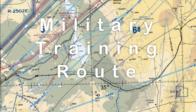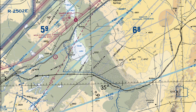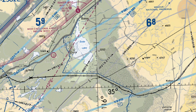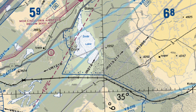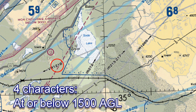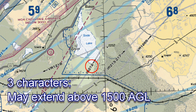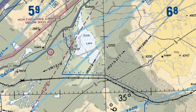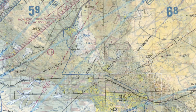Military training routes are a more subtle hazard as they often exist outside of restricted, alert, or MOA-designated airspace. They are often used by fighter-type aircraft that may not necessarily be constrained by the usual 250-knot limit below 10,000 feet. They are depicted as light gray lines with either an IR for IFR or VR for VFR designation and an associated number. A four-character number indicates the route contains no segment above 1,500 feet AGL; those that may extend higher contain only three characters. It's a good idea to have an awareness of where these routes lie around your local flying area and their altitude range. Gliders with no transponder or ADS-B may add to the difficulty of these aircraft avoiding you.